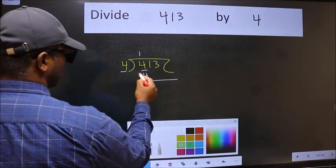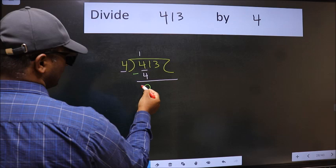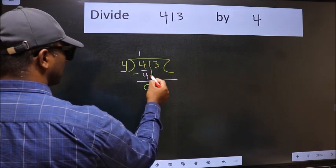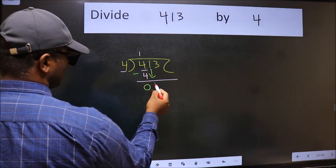Now we should subtract. We get 0. After this bring down the beside number. So 1 down.